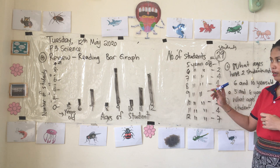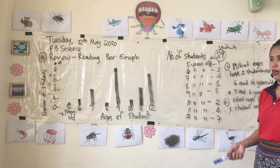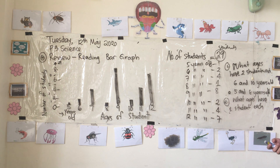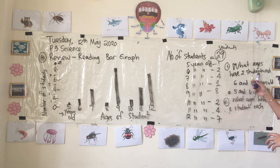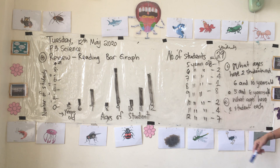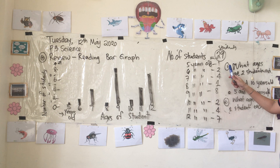If you cannot look at it directly, you can draw a line to help you find the value. I'll explain it so you know what to do during the test. Another question: what ages have two students each? On this side are the students and on this side are the ages, so the answer would be six and ten years old.